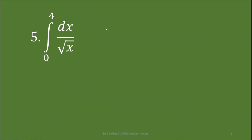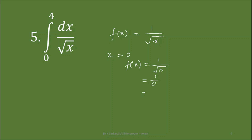In question number five, the integrand f(x) equals 1 by square root of x. If we put x equals 4, then square root of 4 is 2, which is finite, so there is no problem. But if we put x equals 0, then f(x) becomes 1 by square root of 0, that is 1 by 0, which is infinite. That is why this is an improper integral.